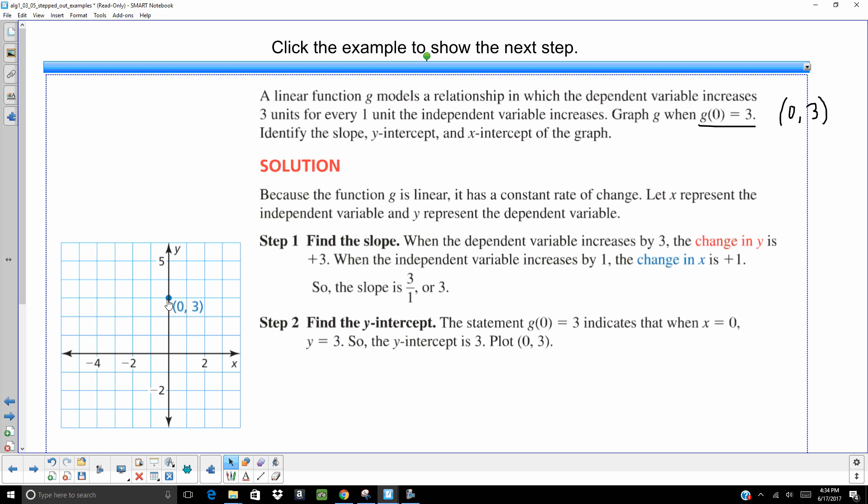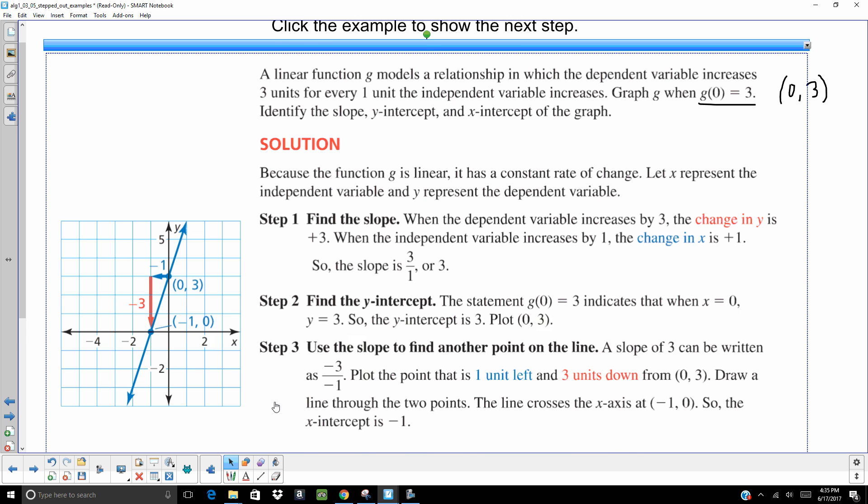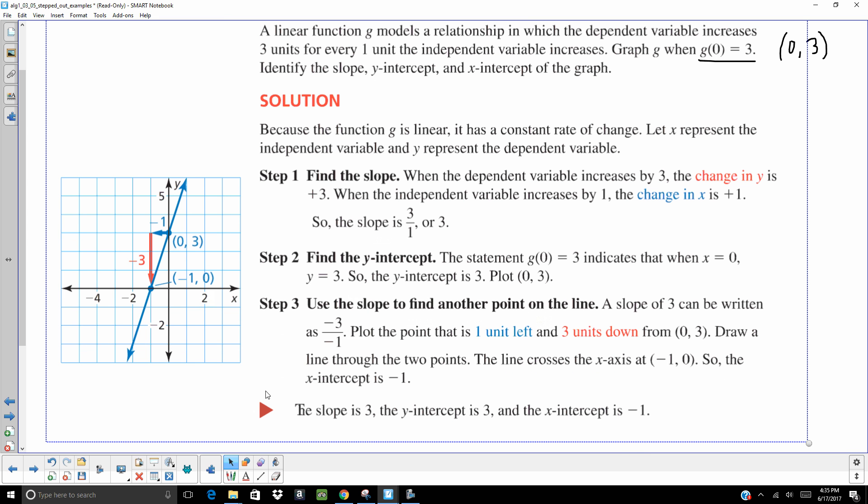So we start with our point of 0, 3. And from that point, we're going to use our slope. They went left 1, down 3. You could have also gone right 1, up 3. Both ways are acceptable. So the y-intercept is 3. The x-intercept is negative 1. I would definitely want to use graph paper if I were doing this problem as well. And a straight edge to draw the line.